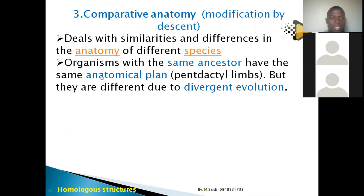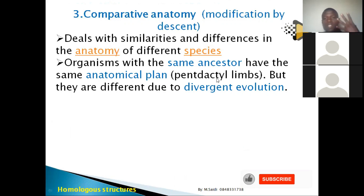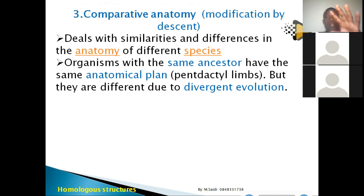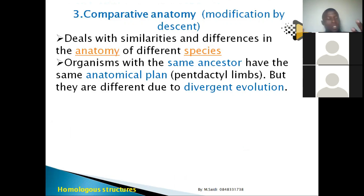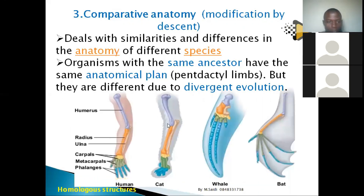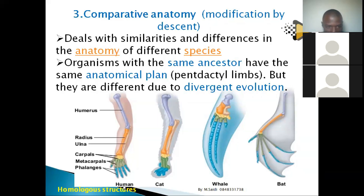Organisms that share a common ancestor often share the same anatomical plan, known as pentadactyl limbs. 'Penta' means five and 'dactyl' refers to digits. If you look at your hand, you have five digits — the same is true for a monkey, a human, or a cat.